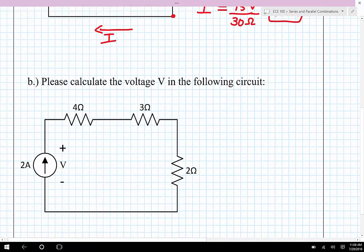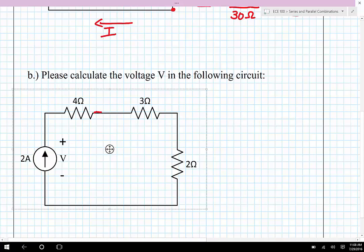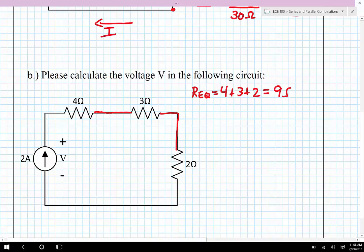Let's consider this example where we now have a current source, and what we'd like to know is the voltage across the current source. Clearly we have three resistors that are pretty obviously in series with one another, so those three resistors can be combined together. So our equivalent is going to be 4 plus 3 plus 2, which works out to be 9 ohms.